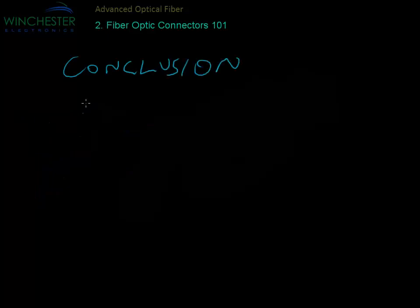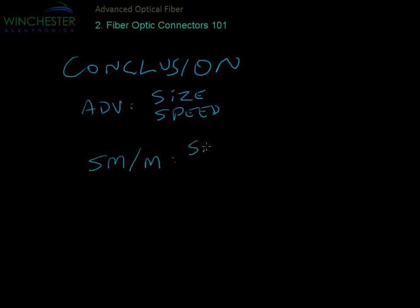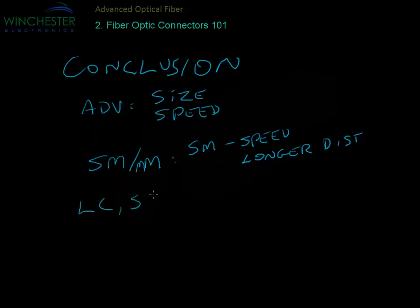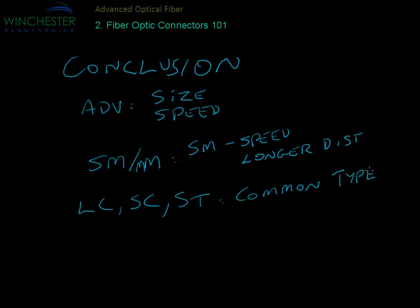In conclusion, fiber has the advantage of size and speed — it's much smaller than copper and capable of much higher bandwidth. For single-mode versus multi-mode, single-mode tends to be faster, with higher speed, and can go for a longer distance. Some common types of connectors include the LC and the SC.